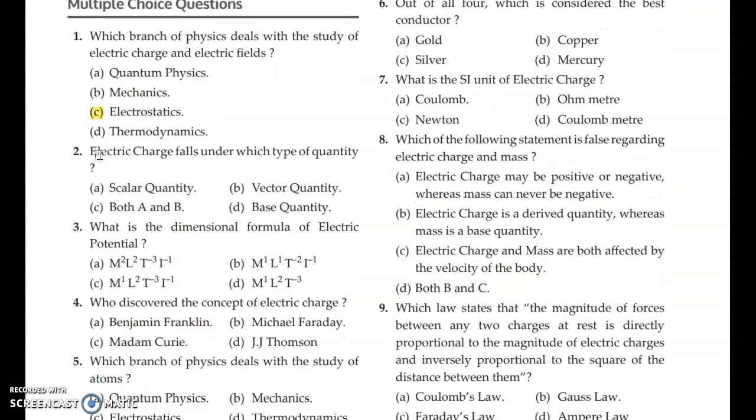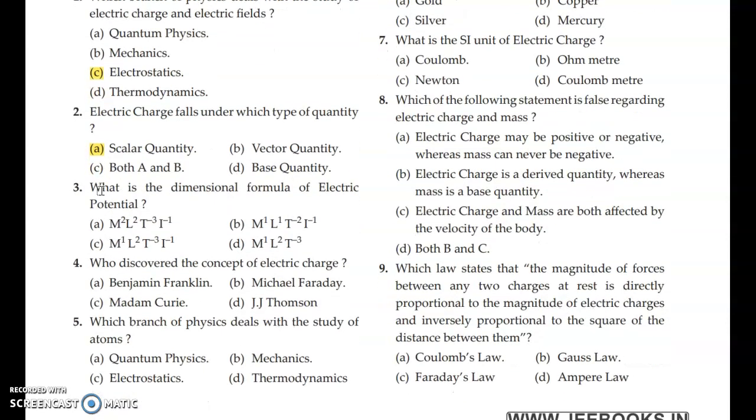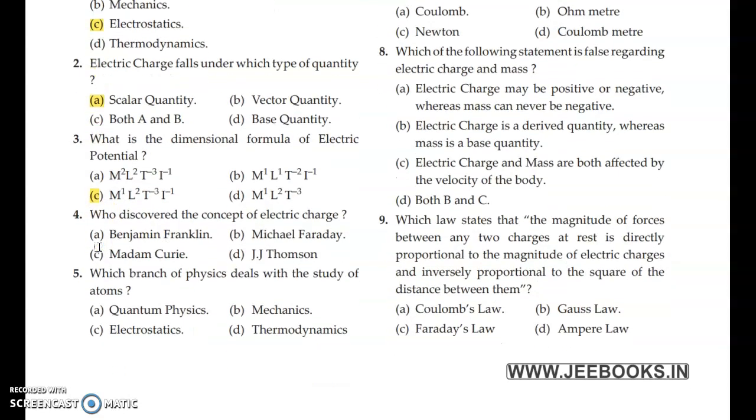Electric charge falls under which type of quantity? Answer is option A, scalar quantity. Scalar quantity has only magnitude but no direction. Who discovered the concept of electric charge? Answer is option A.